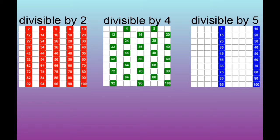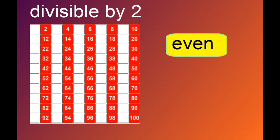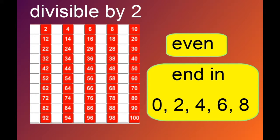So what do we mean by divisible by 2, divisible by 4, and divisible by 5? It simply means the numbers in the 2 times table, 4 times table, and 5 times table. How do we know if a number is divisible by 2? Well, numbers divisible by 2 are simply even numbers, and they end with either 0, 2, 4, 6, or 8.